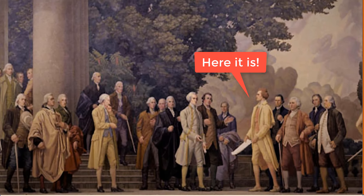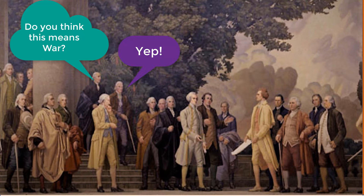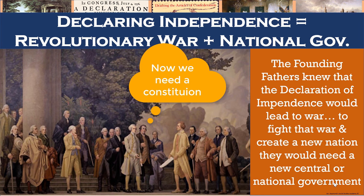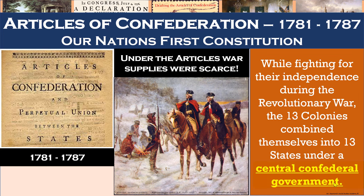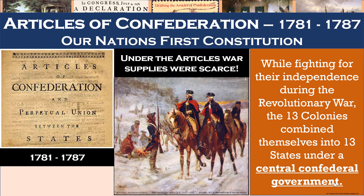The Founding Fathers knew that the Declaration of Independence would lead to war with Great Britain, and that in order to fight a war and to create a new nation, they would need a new central or national government. In the age of constitutionalism, that meant creating one. The 13 colonies, who had been used to ruling themselves almost somewhat as their own nations, rather reluctantly formed a confederation, which is a system of government in which regional — in this case, states — hold most of the power. And the weaknesses of this document were apparent from the beginning.